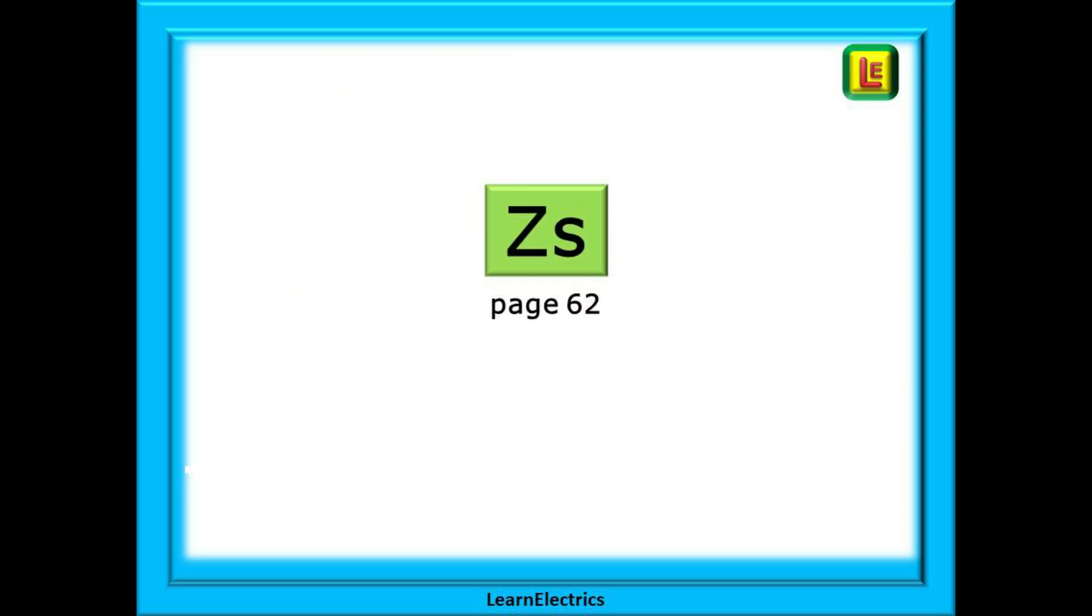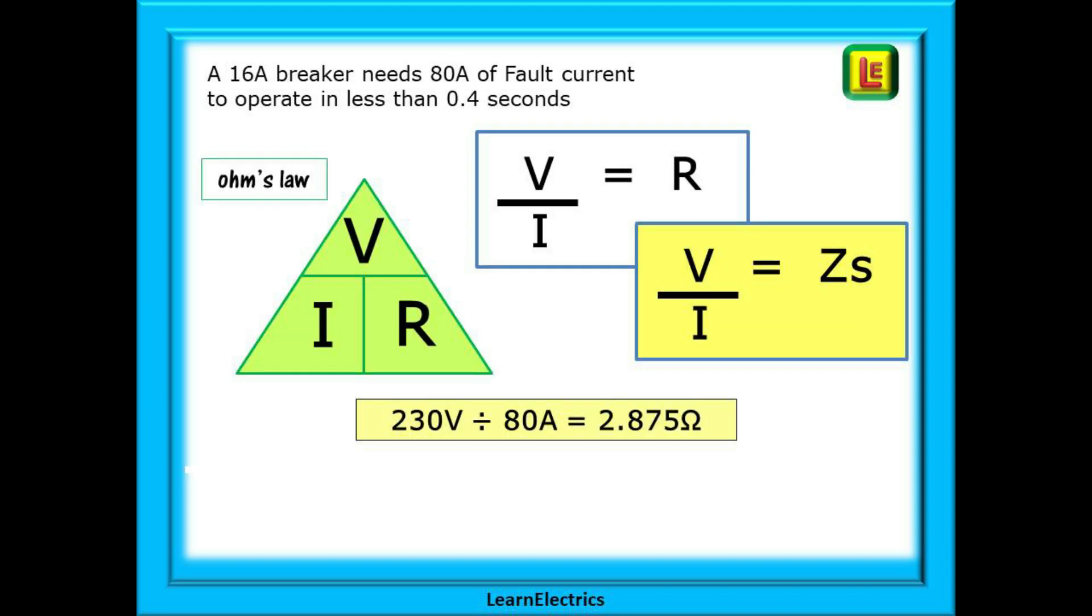Now consider ZS and find page 62 in the wiring regulations book. We could all remember Ohm's law and the equation V over I equals R, voltage divided by current equals resistance. Or we could say that V divided by current equals ZS. Using the 80 amp answer from our example question, 230 volts divided by 80 amps is 2.875 ohms.